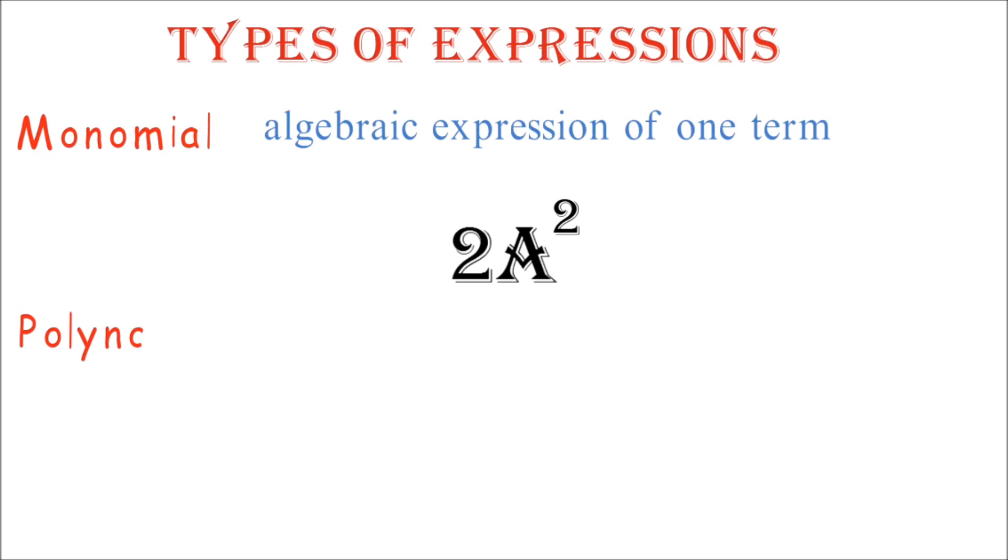Types of expressions. A monomial is an algebraic expression of one term. So when we have a single term like 2a squared, this is just one term and has no plus or minus sign or anything else.